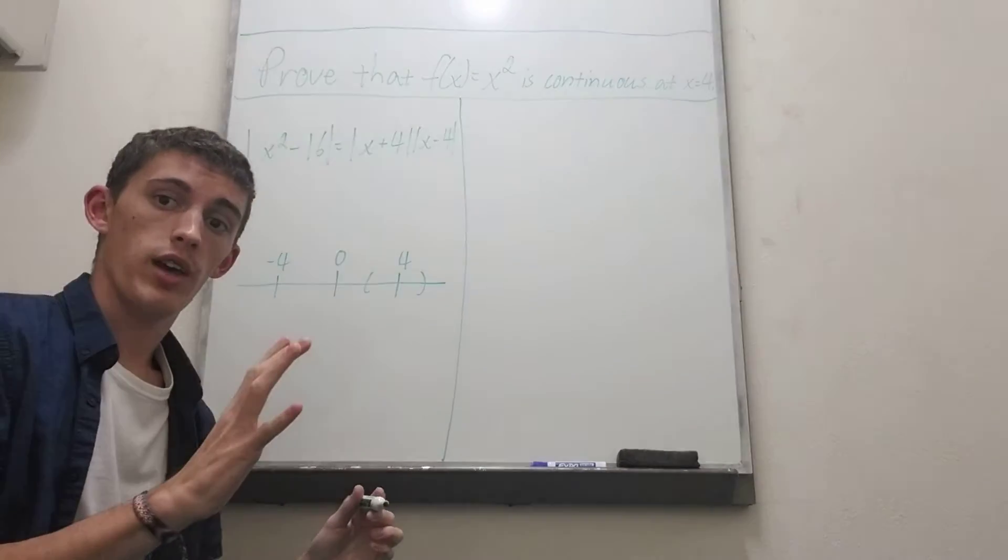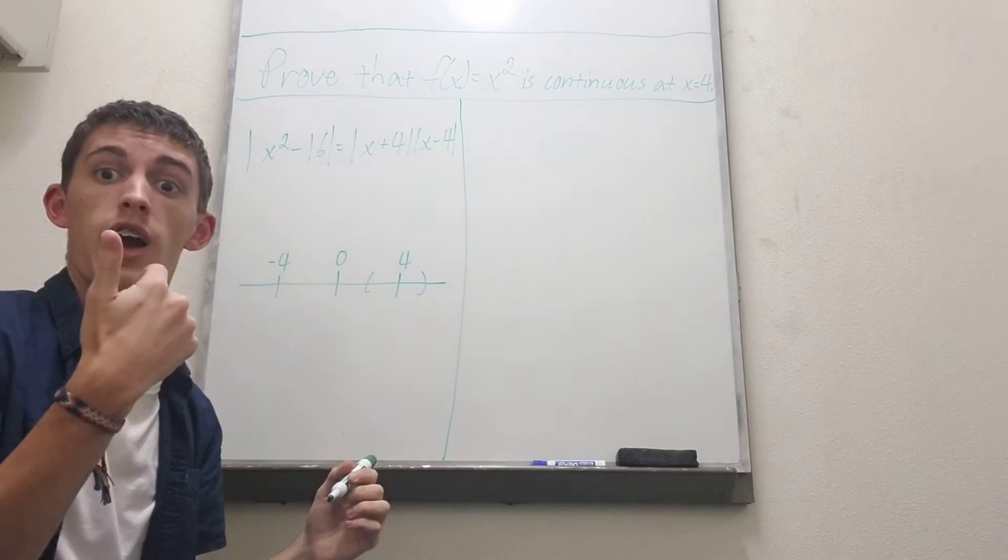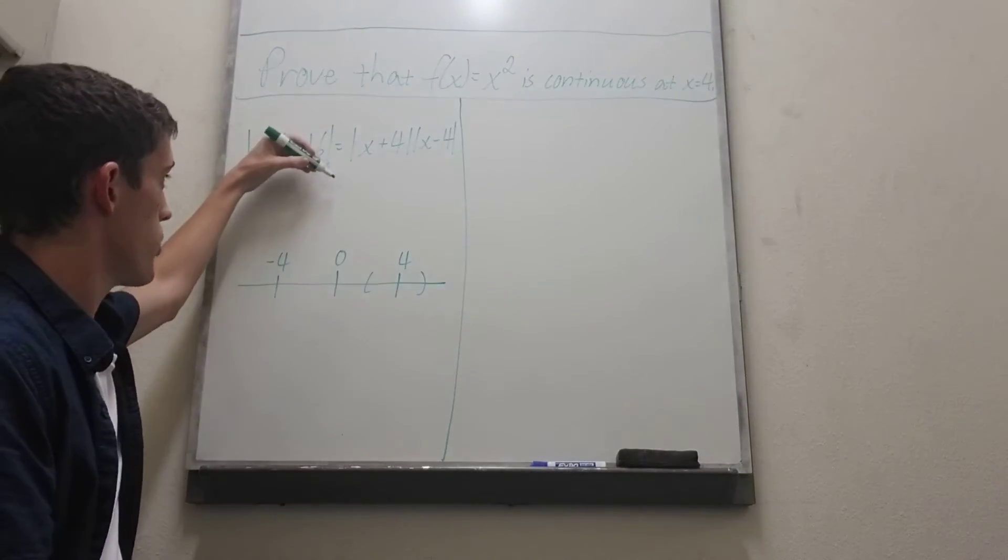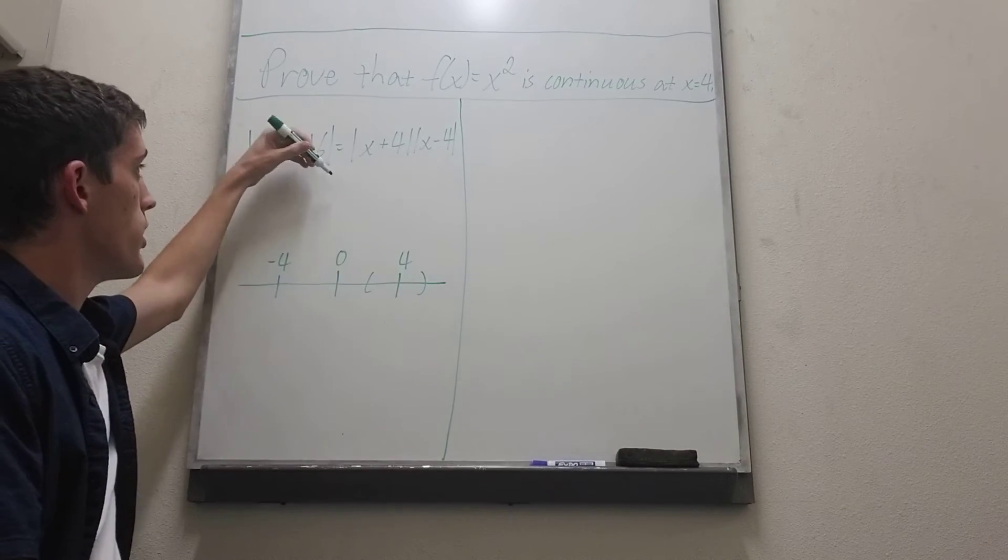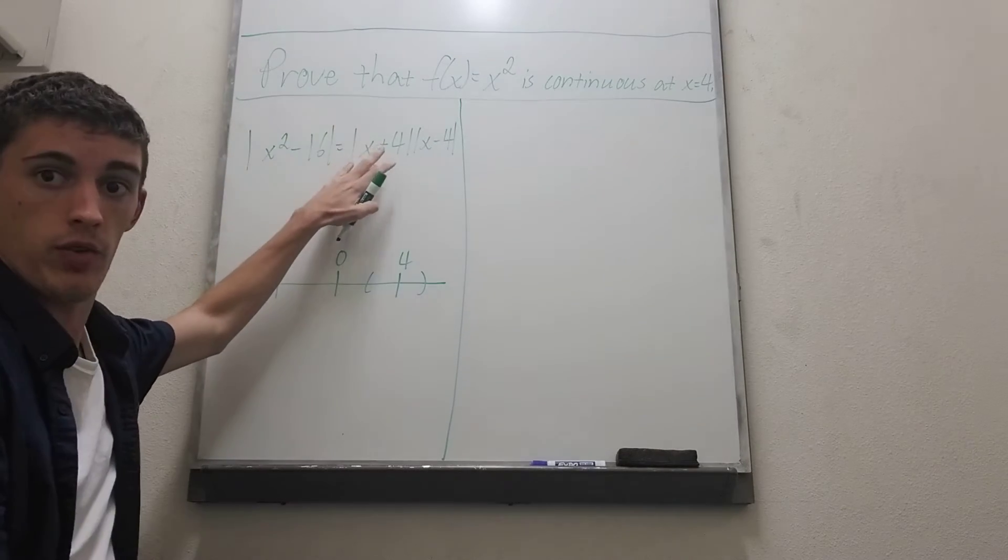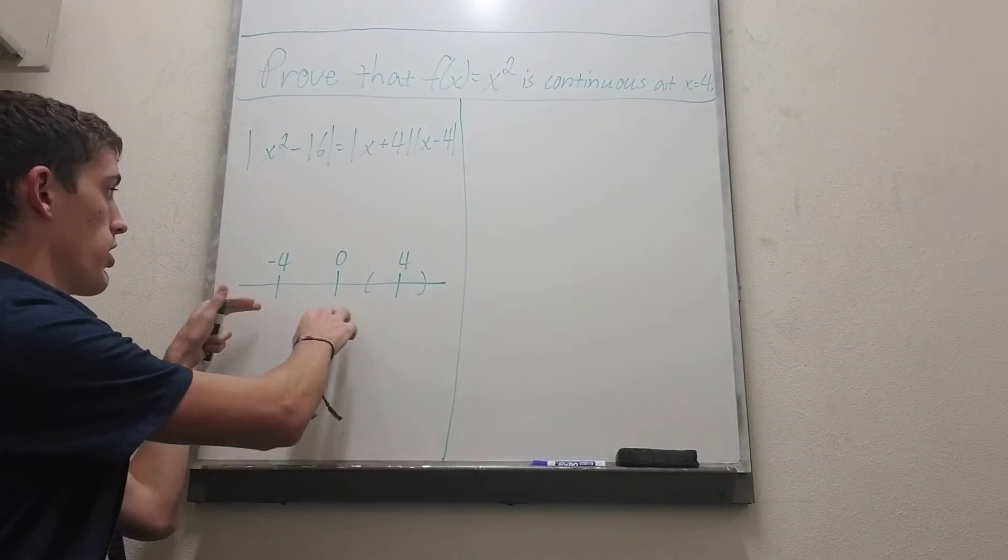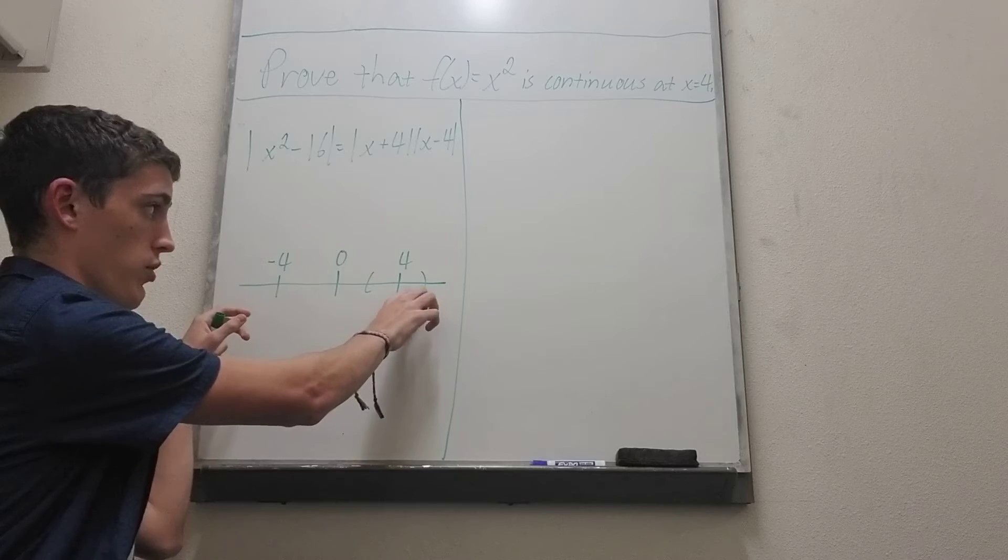So if we do that, if we imagine we can do that, we'll see how we can do it when we write our proof in a second. So when we do that the term absolute value of x plus 4 is going to be bounded by the number 9 because the furthest you can go is 5.